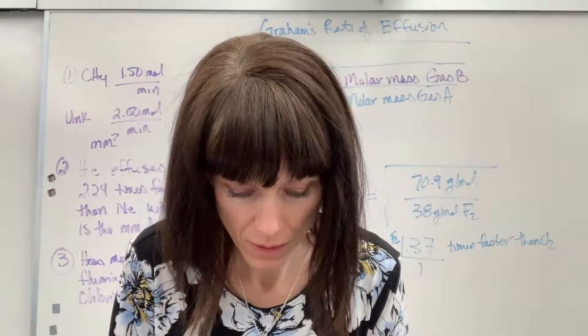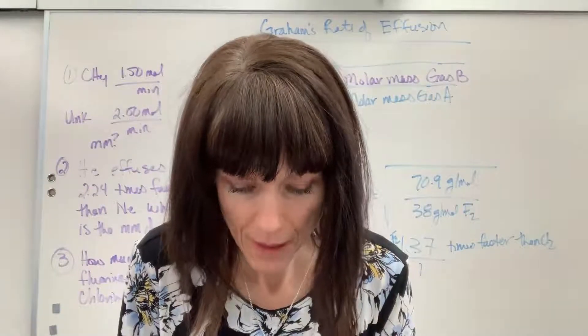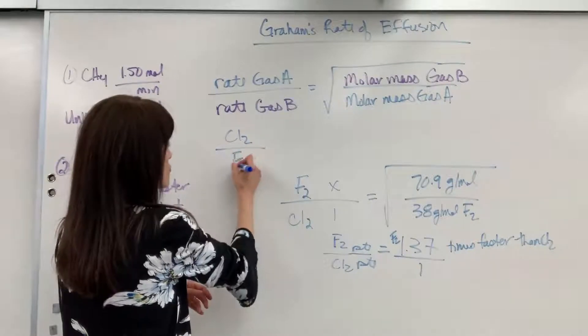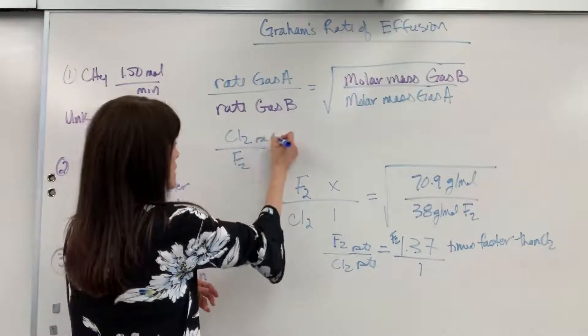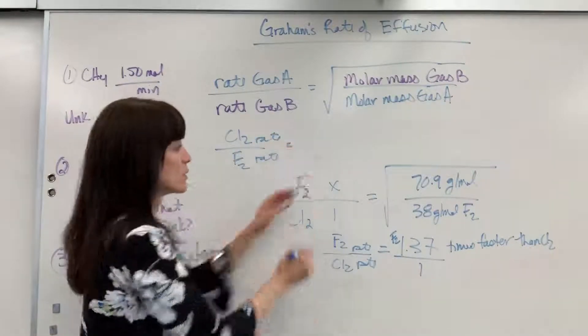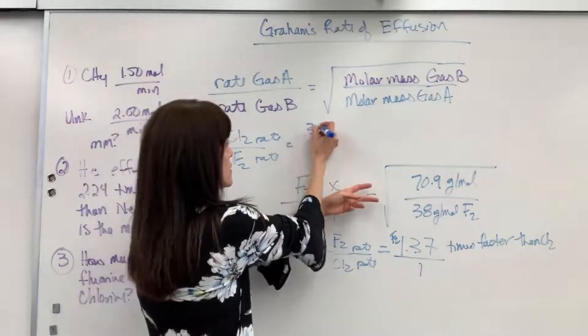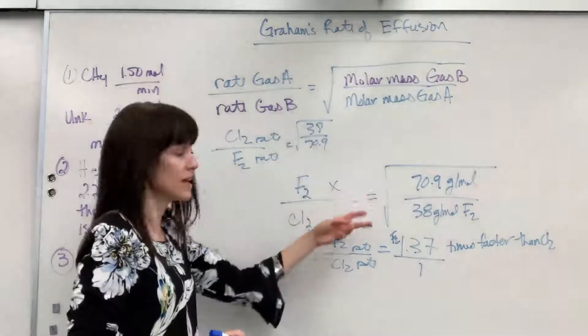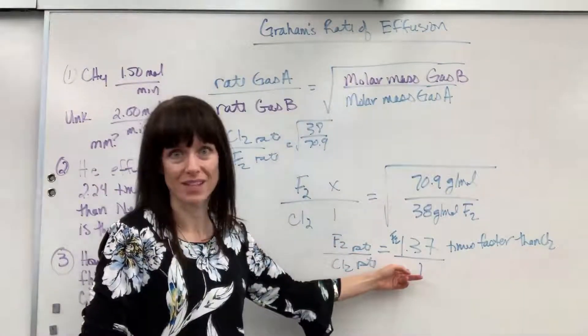If I had done it this way, if I had done chlorine rate divided by the fluorine rate equals, and I just flipped this, it'd be the 38 divided by 70.9. If I did that, it's the reciprocal of this, which would be 0.72.